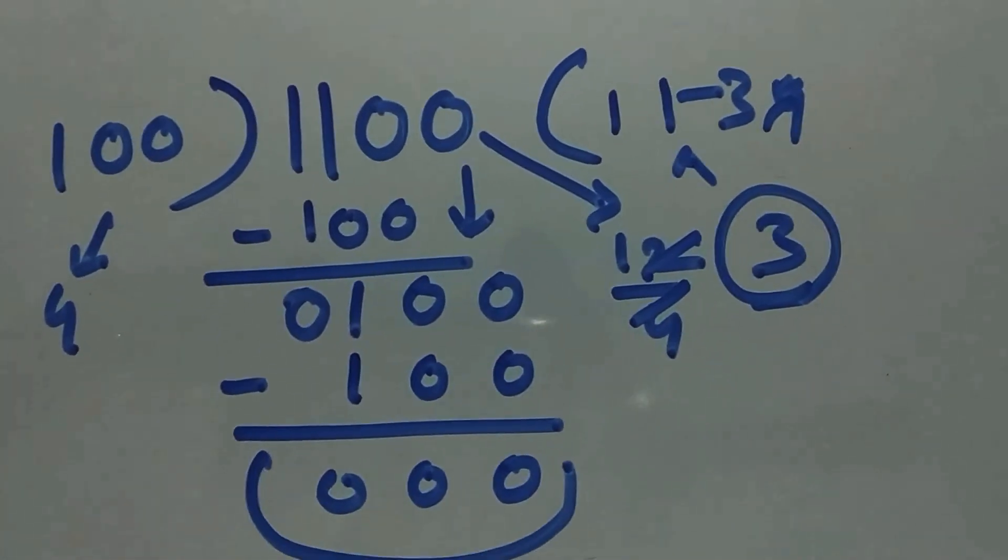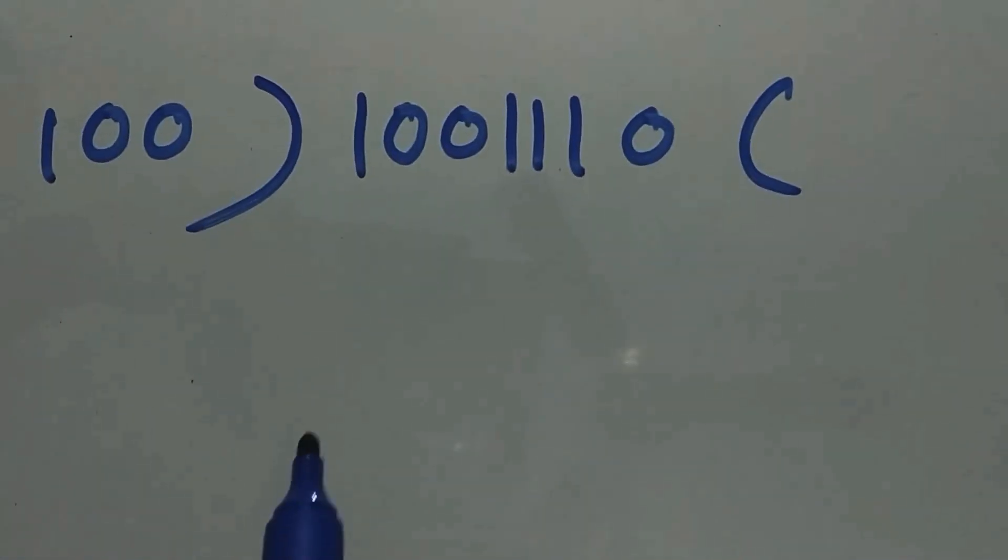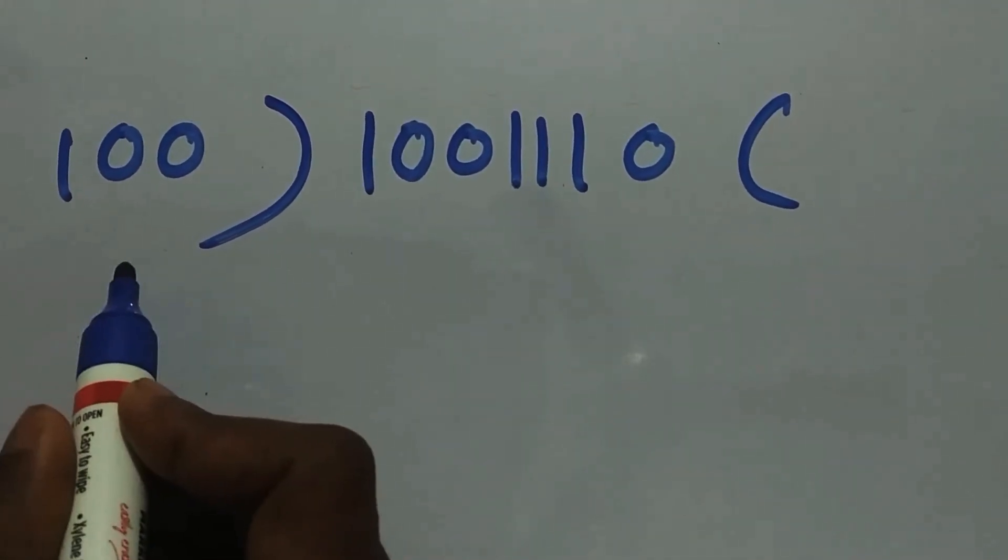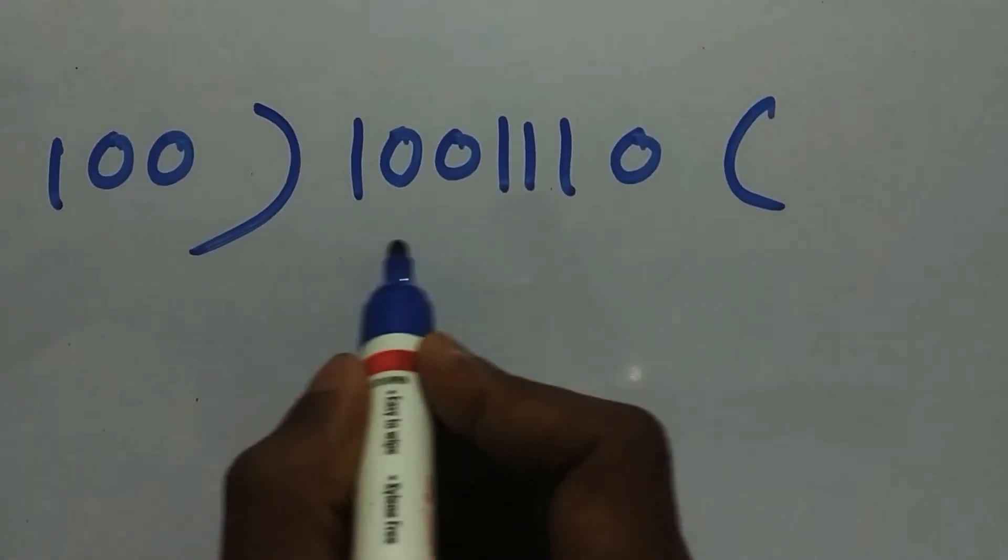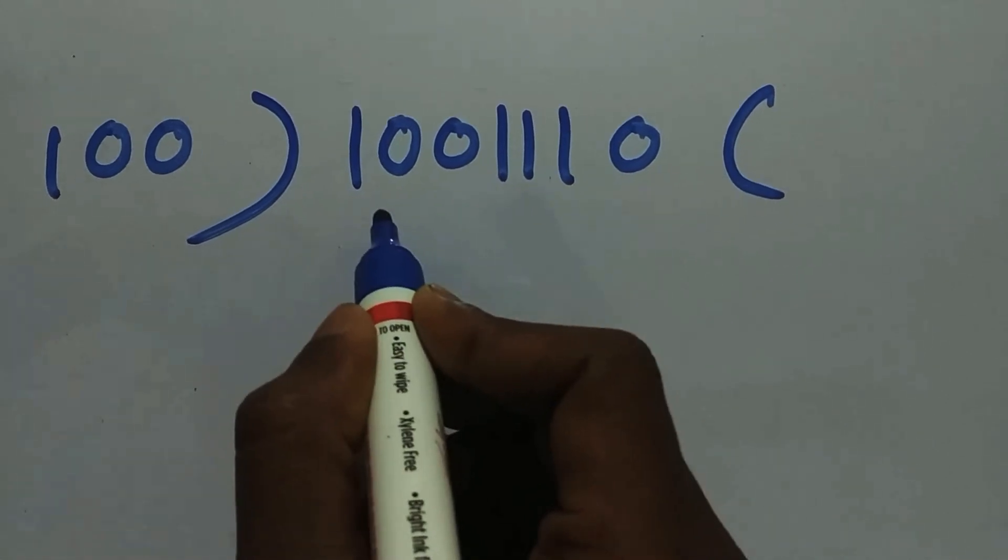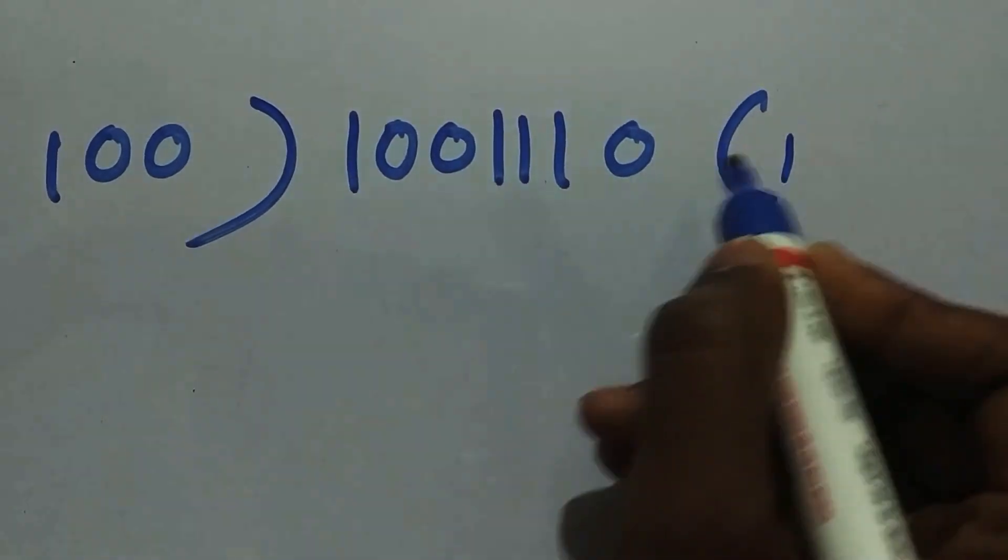Now I'm going to take one more example to give you a better understanding. Here we have 1001110 divided by 100. Similarly like the previous case, we need to check whether this value is divided by 100 or not. We're going to take the first 3 bits and multiply 100 with 1.